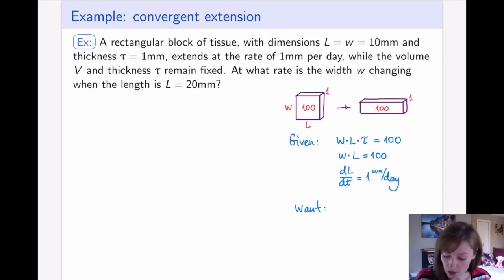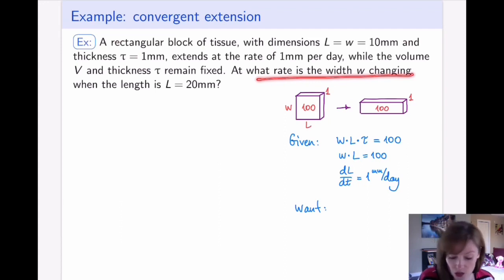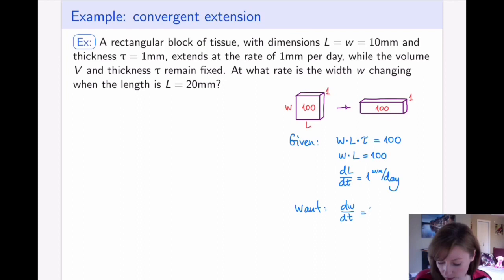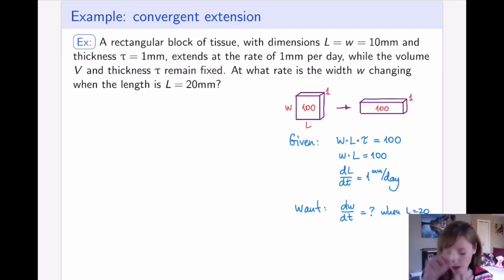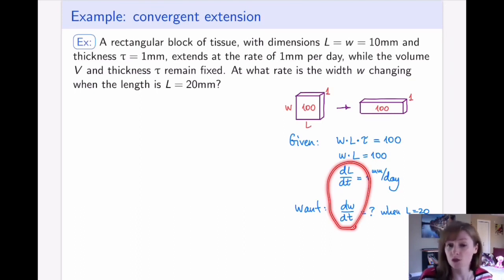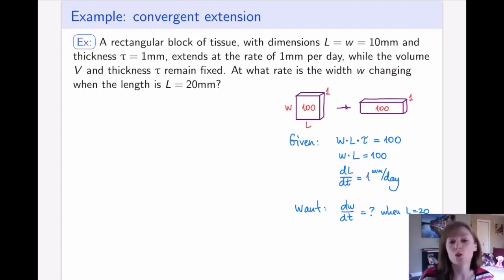What we'd like to know is at what rate the width is changing — specifically dW/dt — when the length is 20. We have everything we need. Since we want quantities involving derivatives with respect to time related to length and width, we need a relationship between length and width, then take its derivative with respect to time. Luckily, that relationship is the constant volume: W × L = 100.